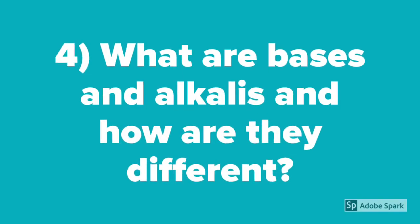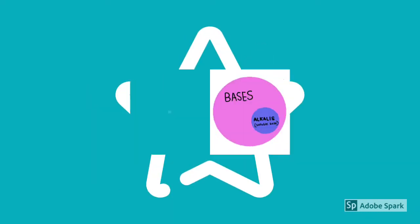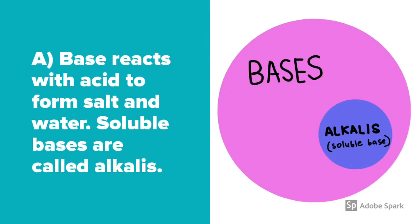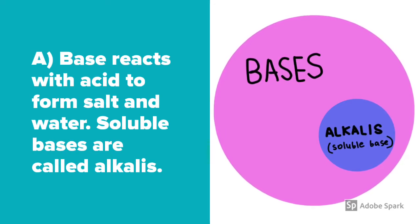Question number 4: What are bases and alkalis, and how are they different? A base reacts with acid to form salt and water — for example, metal oxides and metal hydroxides. If they are soluble in water, they are called alkalis.